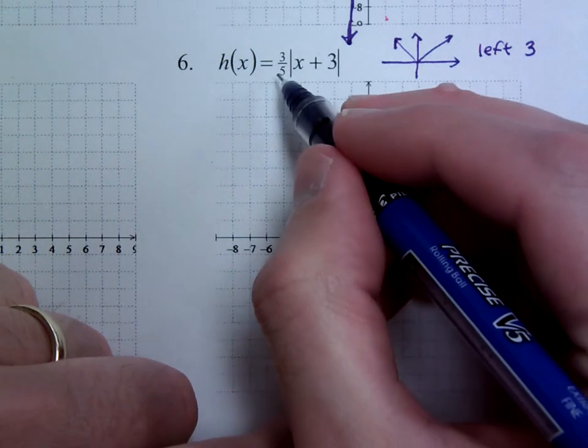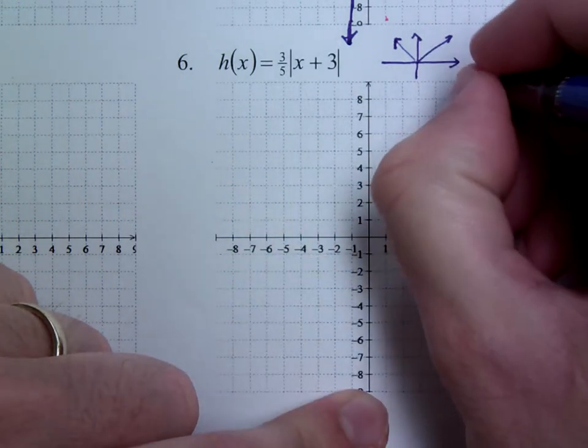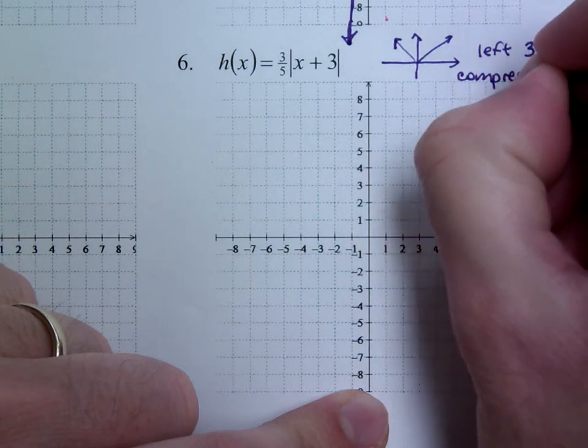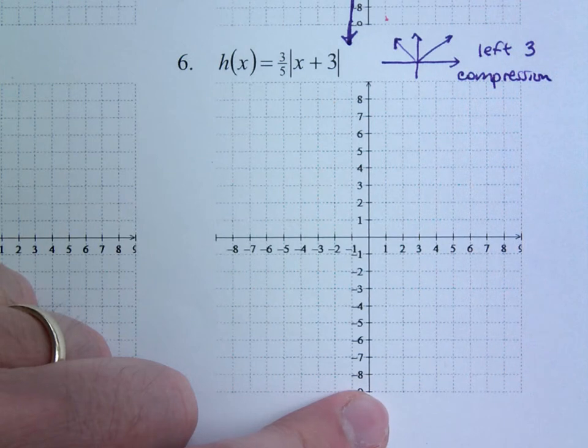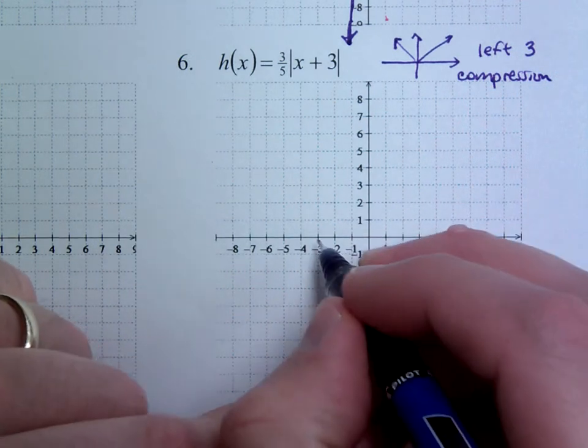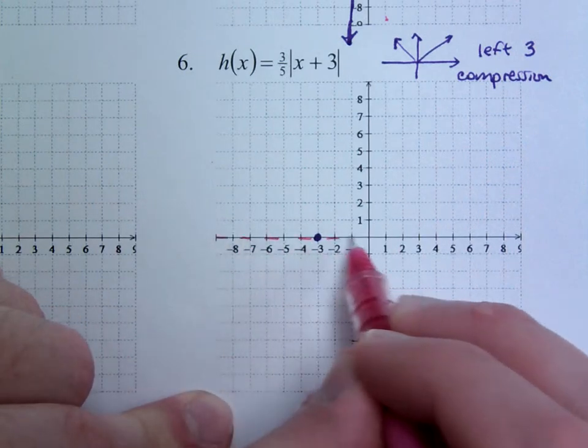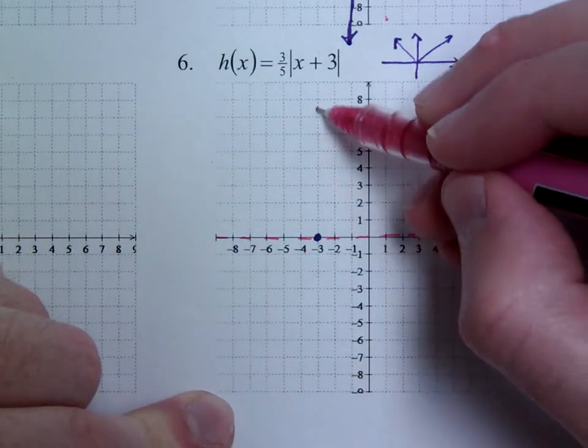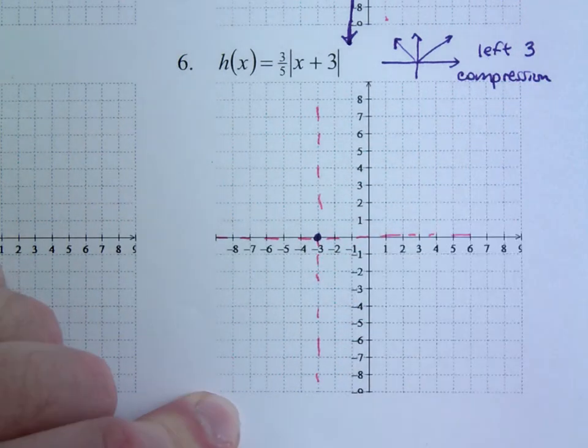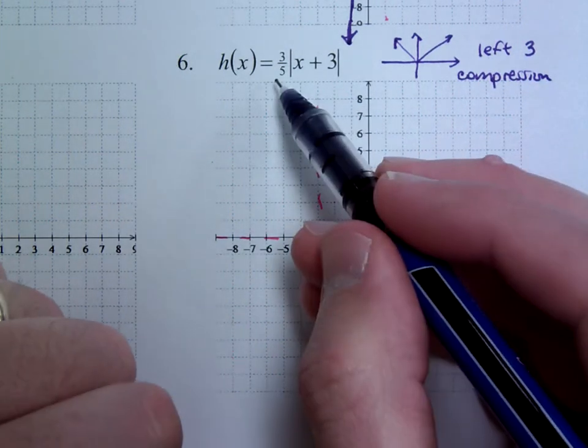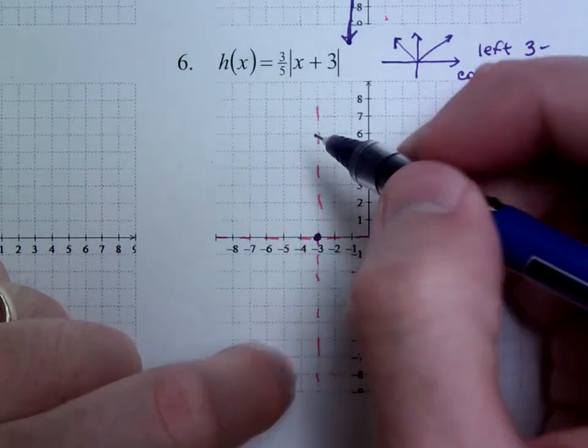And we've got the 3 fifths here. Now since 3 fifths is between 0 and 1, that means we're going to have a compression ever so slightly, but it'll still be a compression. So we're going to go to the left 3 to put my vertex, and I treat this as though it's my new origin, and then I get to use the 3 fifths. I don't need to worry about the left 3 anymore. This guy's done. It's about using the 3 fifths now.